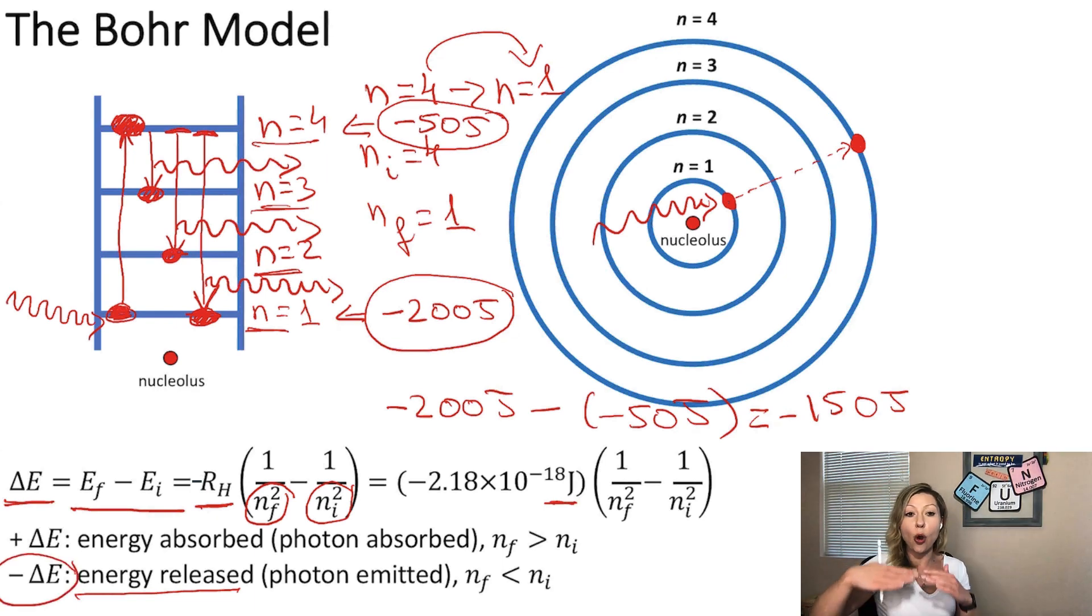Similarly, if we go from a lower energy state, just like going from N equals 1 to N equals 4 right here, we are going to absorb energy. So the change in energy is actually going to be positive. I hope this makes sense.